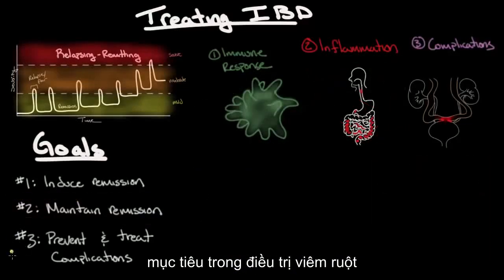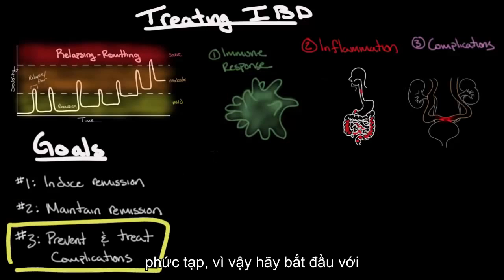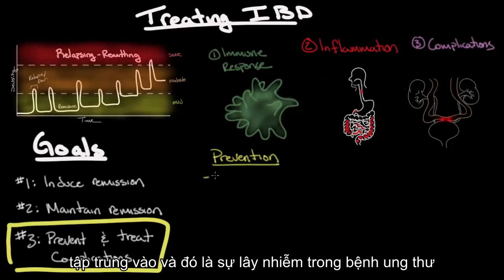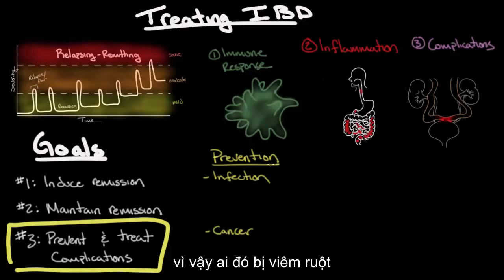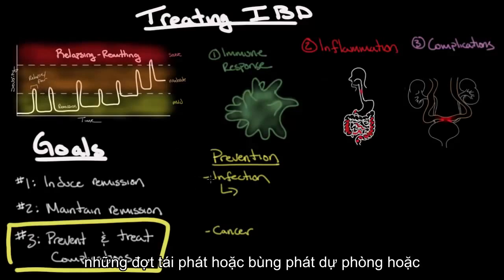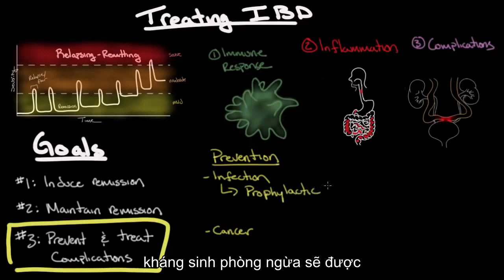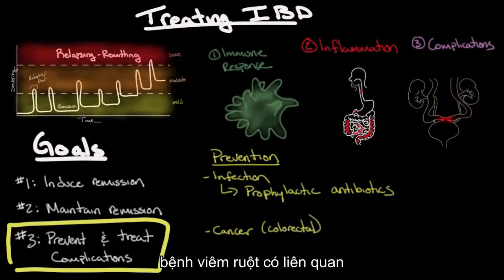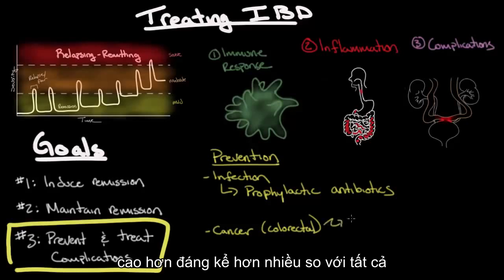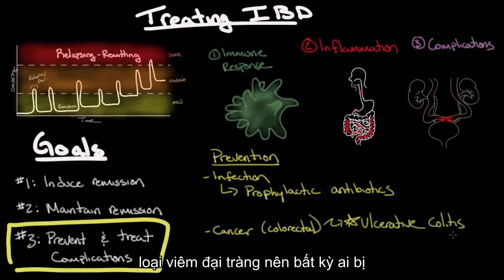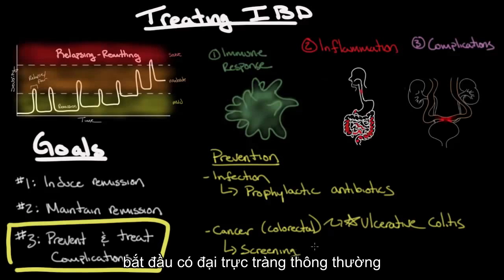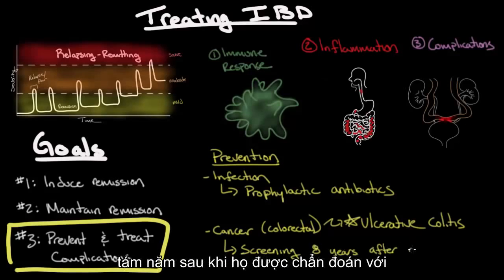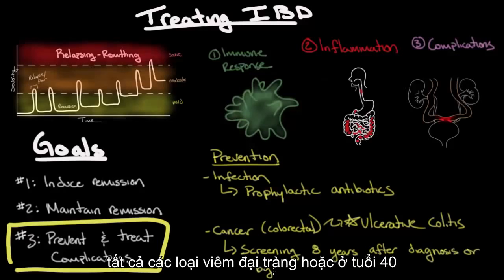The last goal in treating inflammatory bowel disease is preventing and treating complications. There are two main areas of focus: infection and cancer. Someone with IBD during an acute flare is much more likely to develop a severe abdominal infection, so sometimes during relapses, prophylactic antibiotics will be prescribed. Regarding cancer — specifically colorectal cancer — IBD is associated with a much higher risk, significantly more so in ulcerative colitis. Anyone with ulcerative colitis is recommended to start routine colorectal screening with colonoscopy starting eight years after diagnosis or by age 40, whichever comes first.